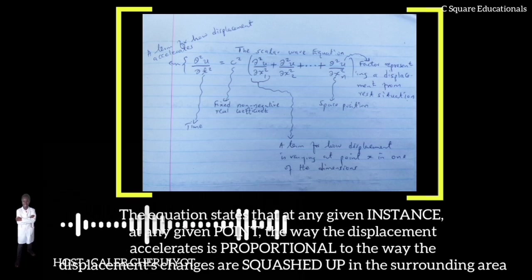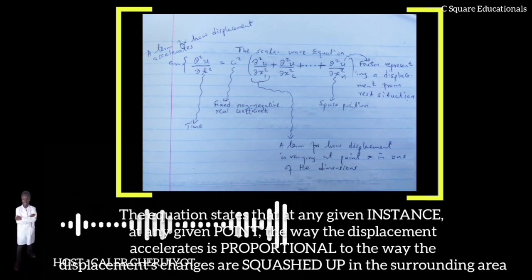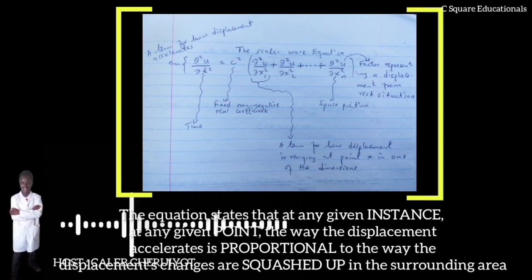The scalar wave equation states that at any given instance, at any given point, the way the displacement accelerates is proportional to the way the displacement changes are squashed up in the surrounding area, or in even simpler terms, the way displacement gets pushed around is proportional to how pointy the displacement is and vice versa.